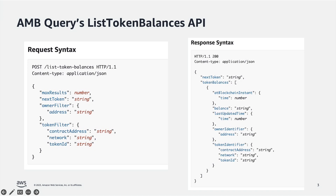I'll explain AMB Query's ListTokenBalances API and what it does. You can see what the request syntax and response syntax look like. The ListTokenBalances API allows us to list all token balances owned by an address — either a contract address or a wallet address. It allows us to list all token balances for all tokens created by a contract, and it also lists all token balances for a given token. What we'll be doing today is calling the ListTokenBalances API and we'll see a list of NFTs in our collection.